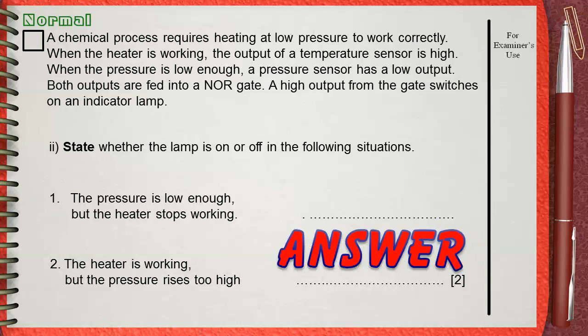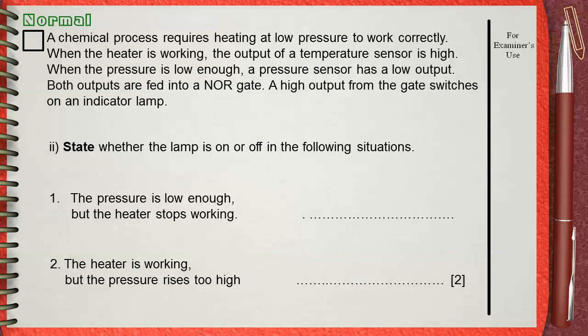Let's discuss the first case. When the pressure is low enough, the pressure sensor will give zero. When the heater stops working, the temperature sensor will also give zero. When zero and zero are fed to the NOR gate, the output will be one. So the indicator lamp will be on.